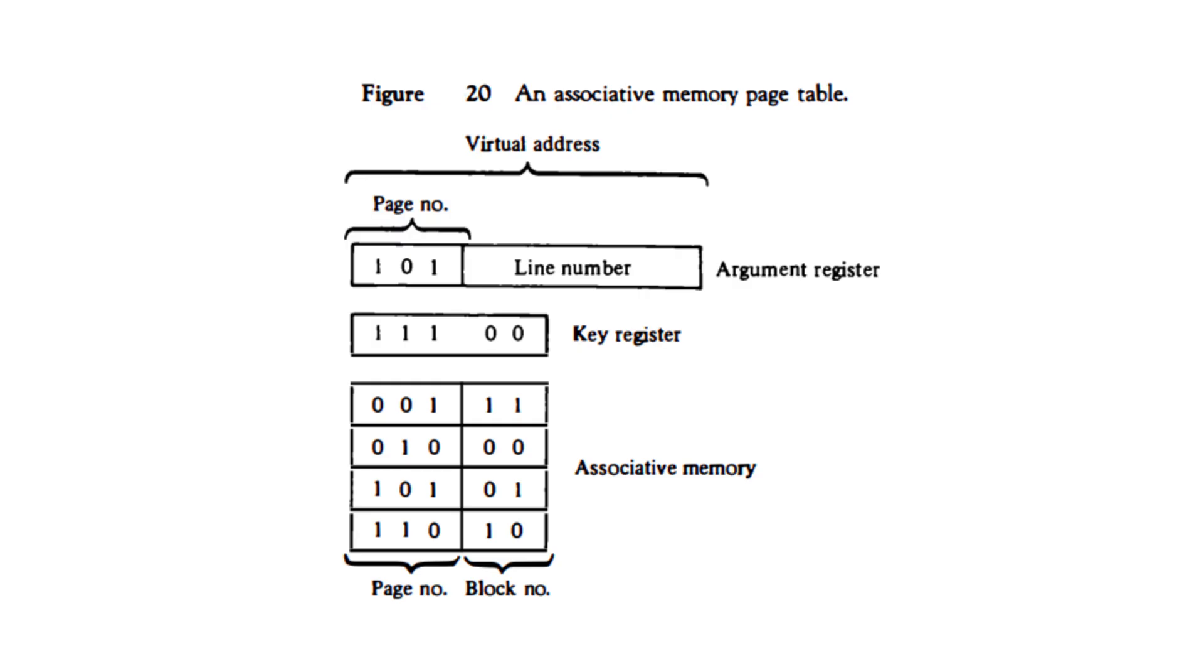So how do we actually get the data out? The read operation is where associative memory really shines. You provide the data you're looking for in the argument register and the key register. The memory performs the comparison and the match register indicates which words match.